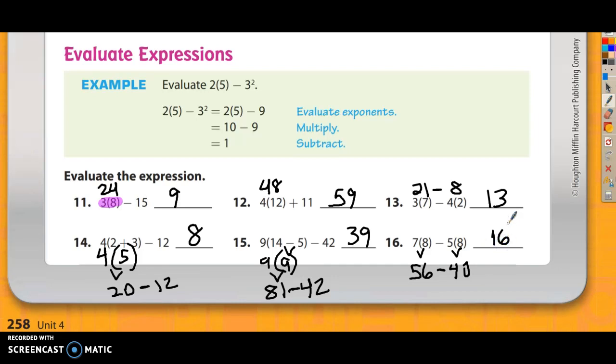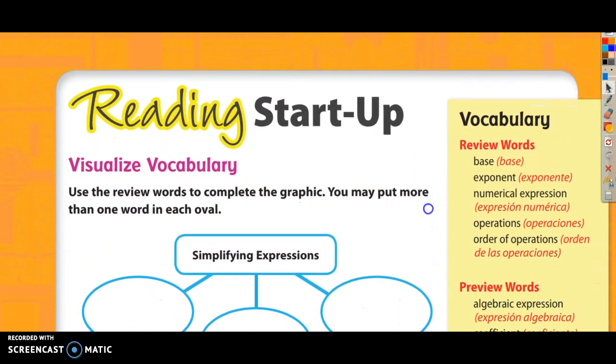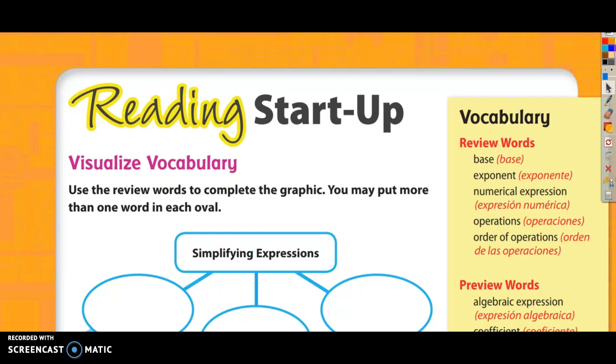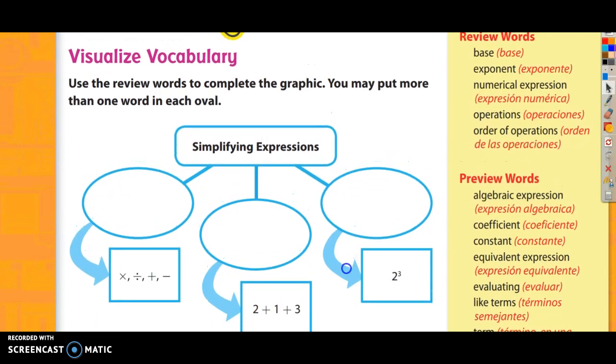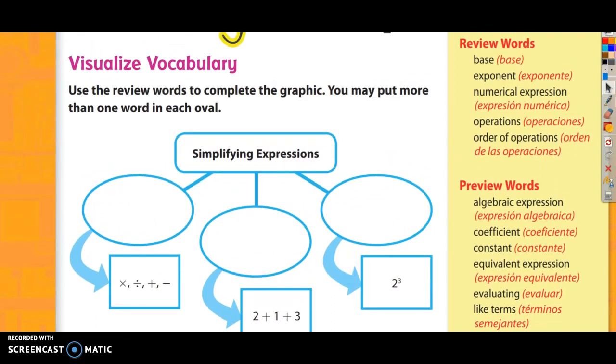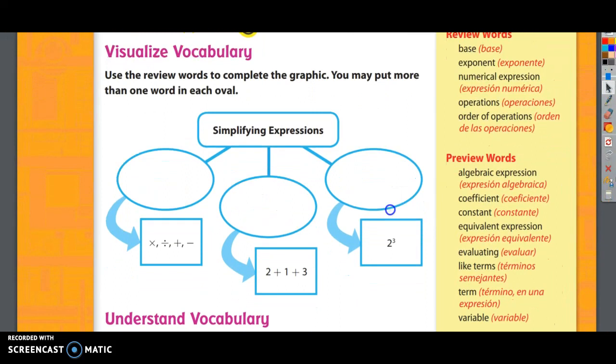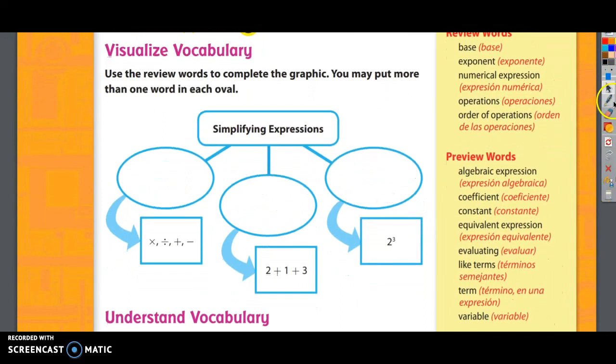All right, this video is just going to keep rolling and go right into the next page. We're going to do the vocabulary from the reading startup page. Let's read the directions here. It says visualize vocabulary. Use the review words to complete the graphic. You may put more than one word in each oval. So that often means we should do a couple. I'm going to change the size here so I can see everything. So my options are these review words up here. And I've got base, exponent, numerical expression, operations, and order of operations. Let's go decide where everything can go.